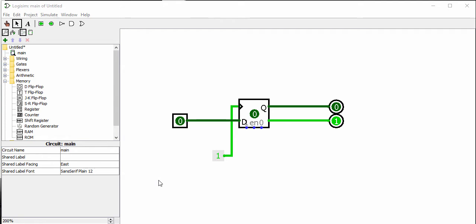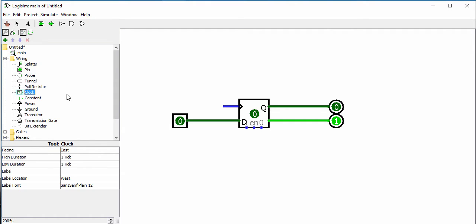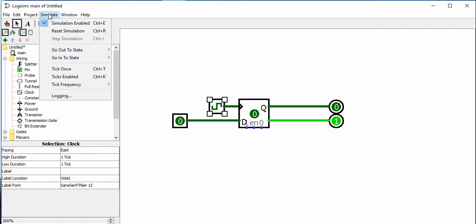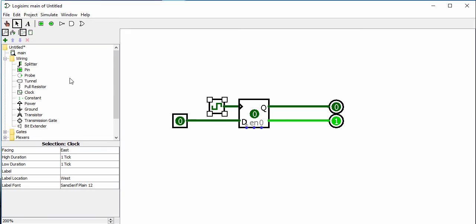So let's see if we can see these features in the Logisim D flip-flop. Let's start off by replacing this with a clock. So where would we find a clock? Clock. Okay, and the clock's duration is one tick. All right, now let's go up to simulate and choose the tick frequency. So it's once per second. Let's make it two times per second. And then enable them. So now the clock's ticking.